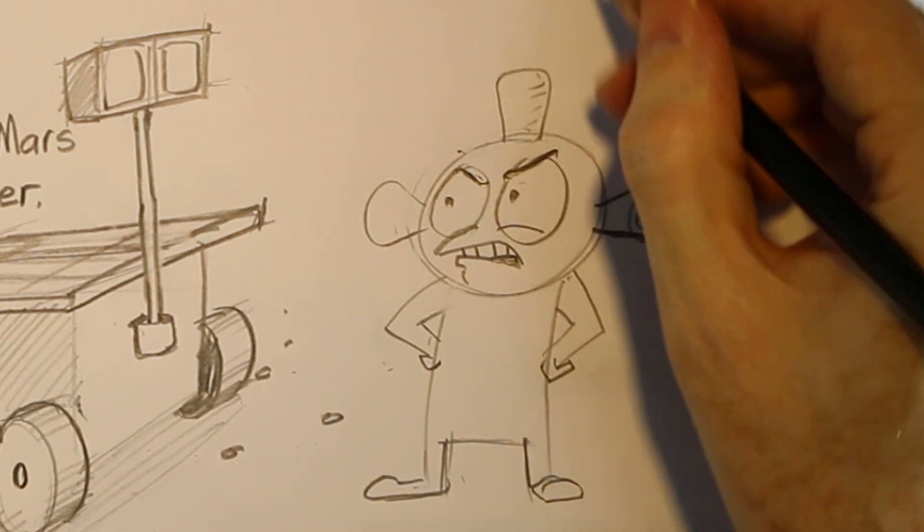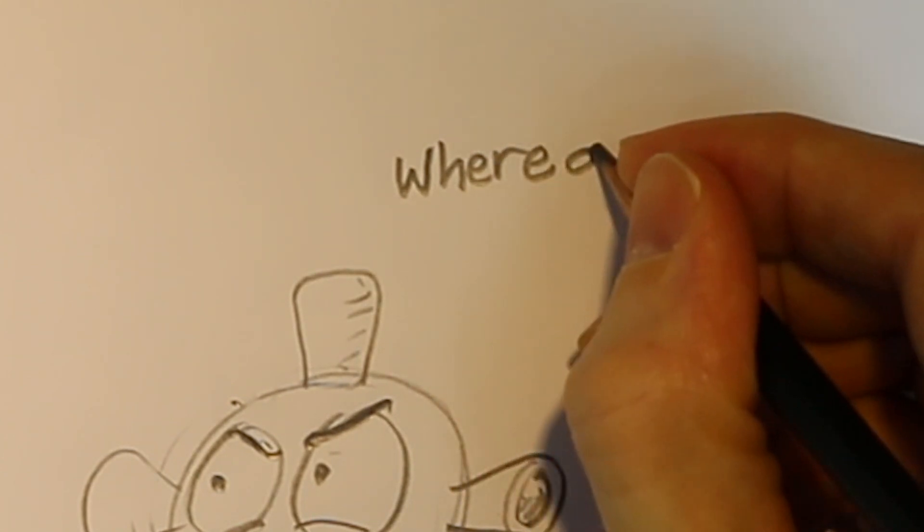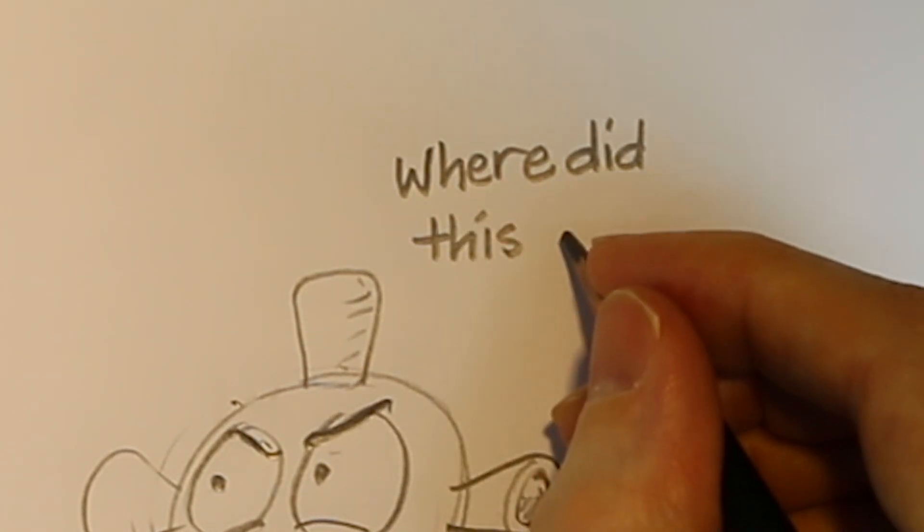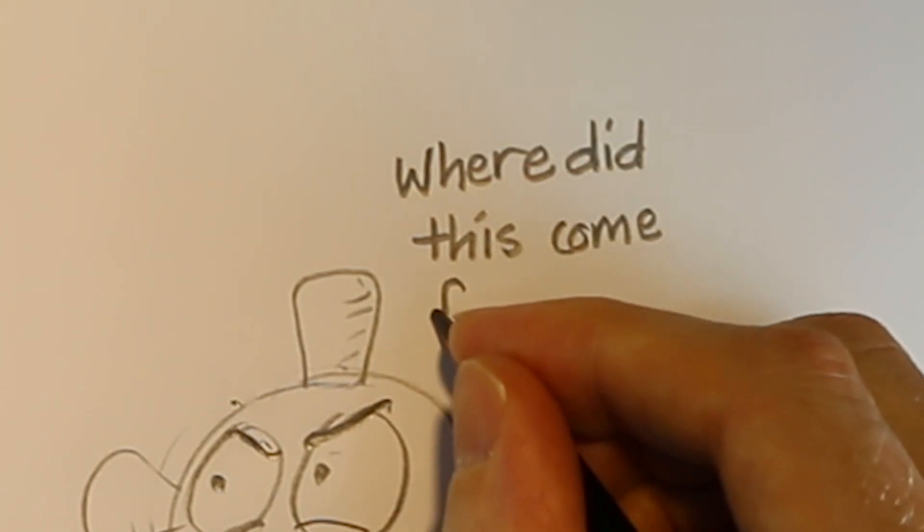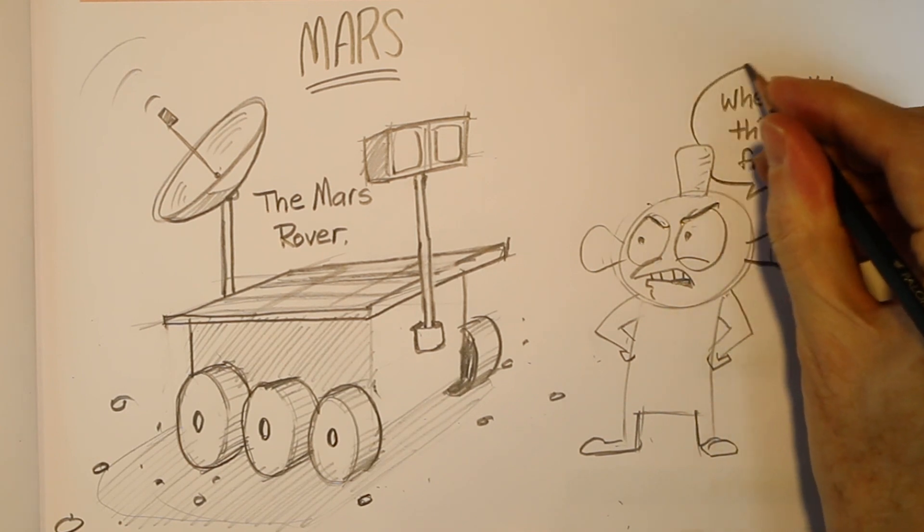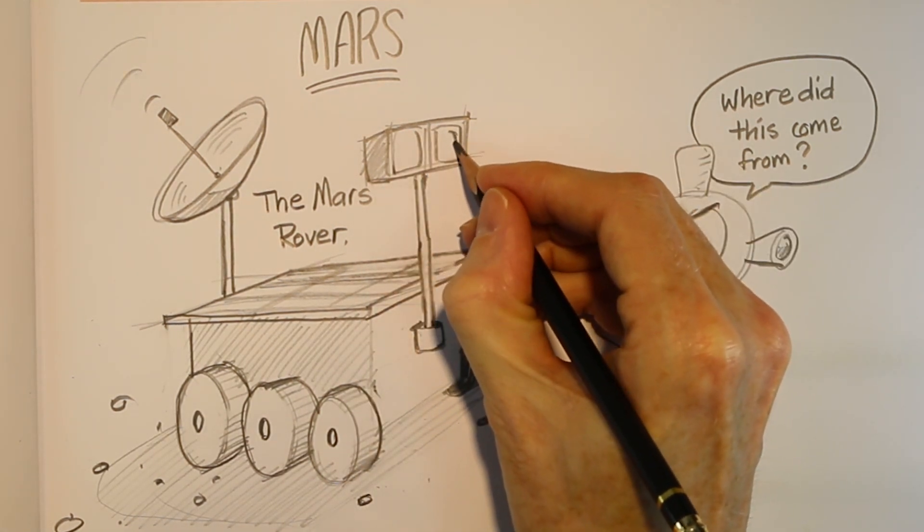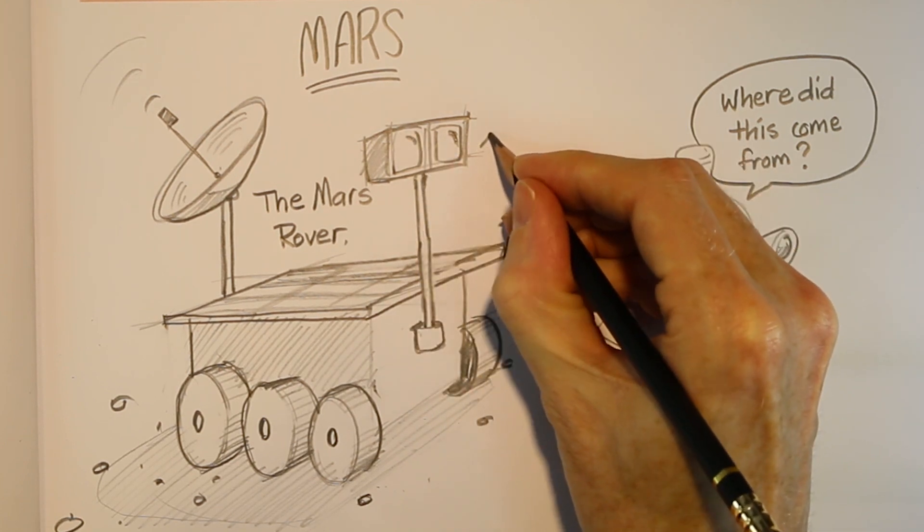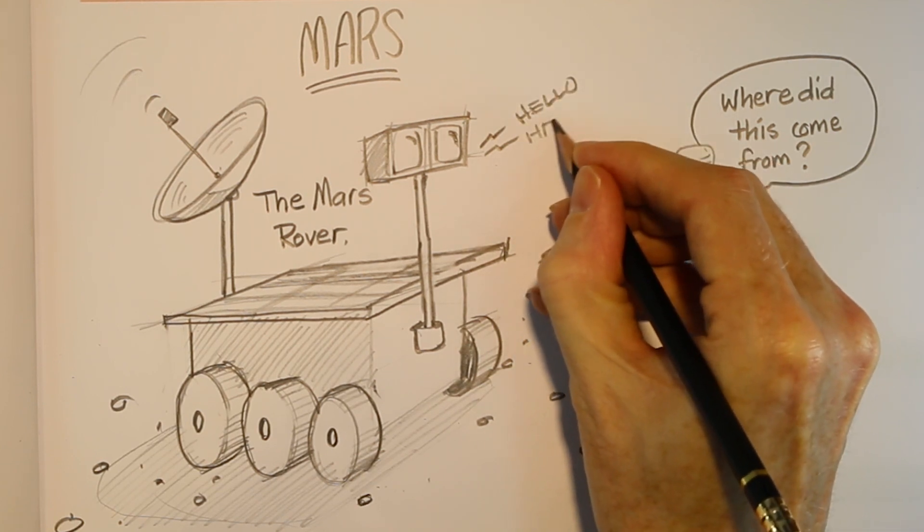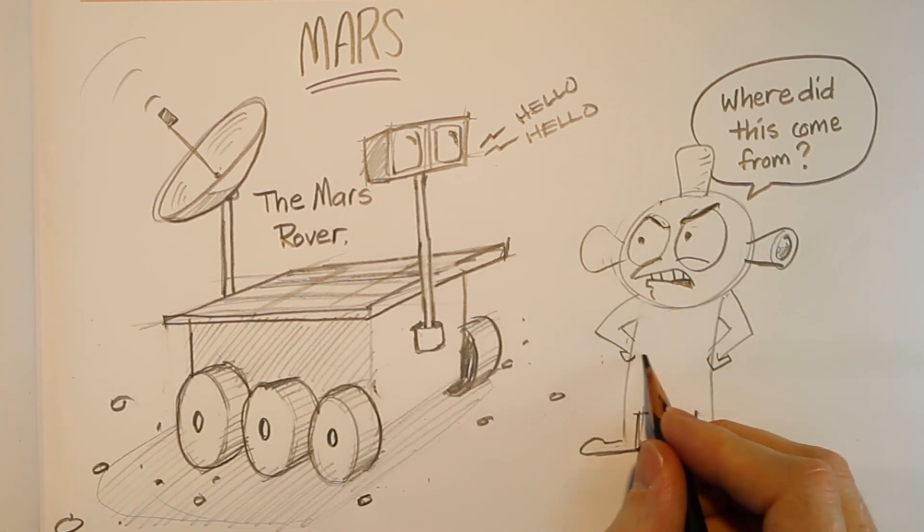And he says, where did this come from? And let's take a peek over here. Maybe we can have the rover saying something. We can have this kind of electric voice coming out like this. It says, hello. Hello. All right. Well, we got our hellos in there. Let's go ahead and go back over here. And we'll finish up our alien. We'll give our alien some alien clothes.